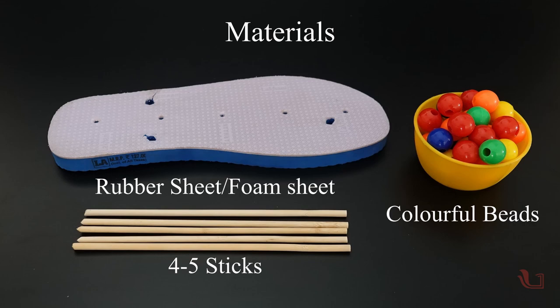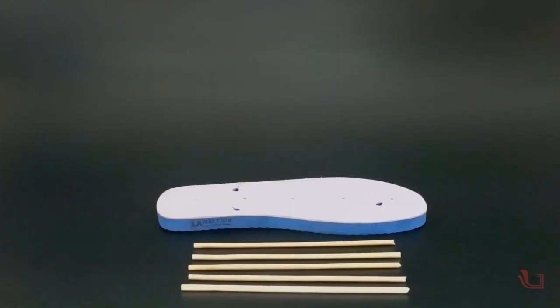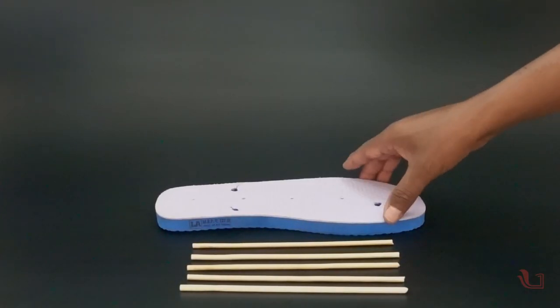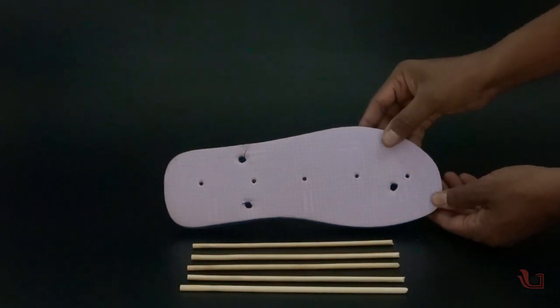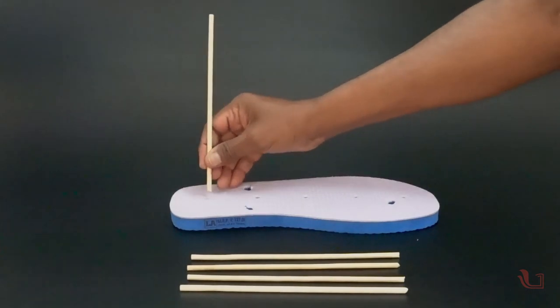First, make 5 equidistant holes in the rubber base using a nail or any pointed tool. Fix 5 wooden sticks in the holes to make a stand.